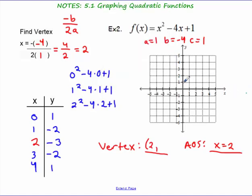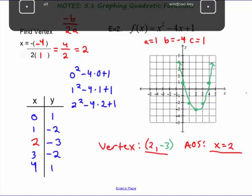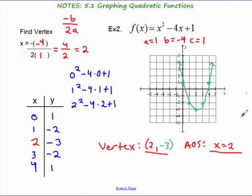So 0, 1, 1, negative 2, 2, negative 3, 3, negative 2, and 4, comma 1. Now, since this number in front of x squared was positive, we could have predicted that this would be a parabola opening up. So, it does look like a u. And to lastly fill in the y-coordinate of our vertex was negative 3. So, there we have it.